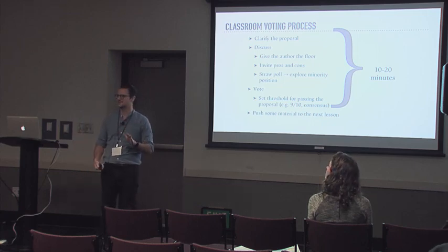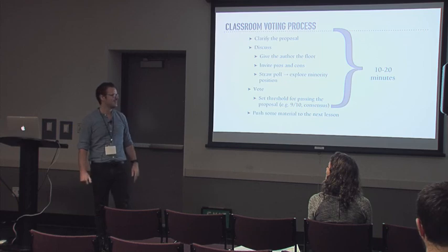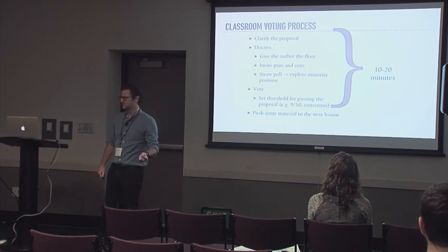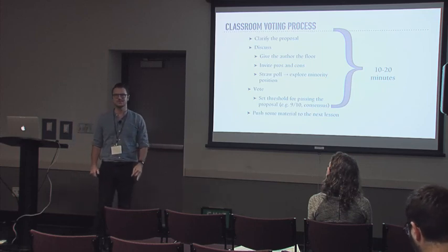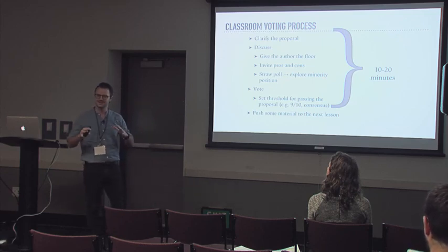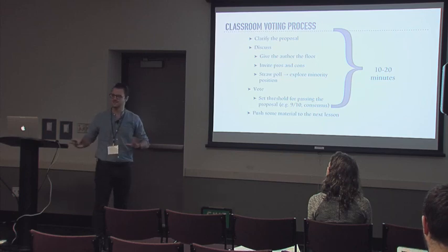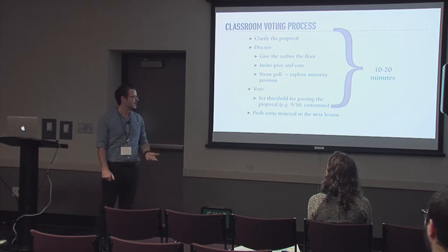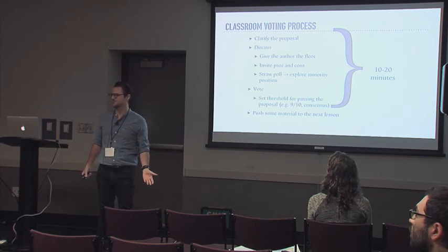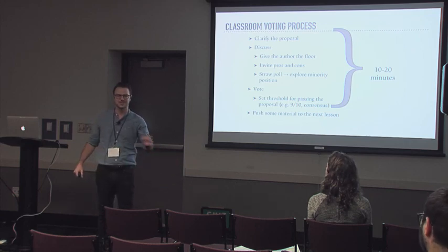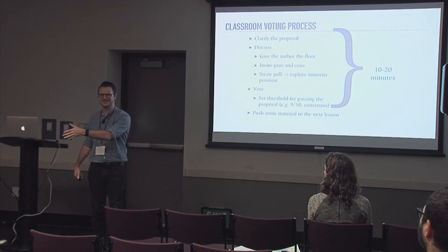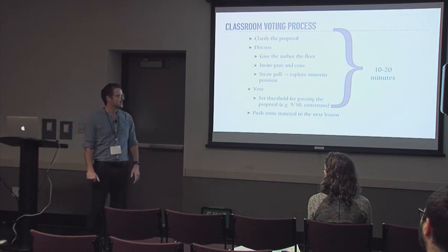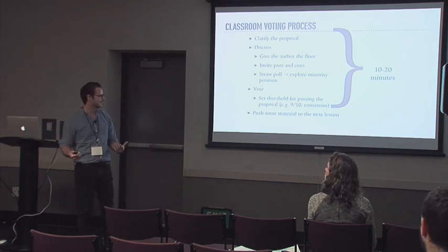Never just jump straight to voting, because the discussion phase is really the best part of all this. You want to give the student who proposed a chance to explain why they proposed it and make their case. Often students don't quite have the schemas to start working on this — usually it's the first time anyone has ever done this. So after I give the floor, I invite pros and cons. Then I'll do a straw poll — you vote as if you were going to do the vote, but you say it's non-binding. I pick the people who are in the minority and ask them to explain their opinions a little bit more, and that's an opportunity to really explore the meat of the issue.